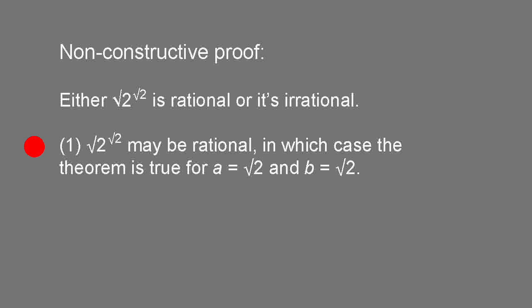First, it may be that root 2 to the power of root 2 is rational, in which case the theorem is true for a equals root 2 and b equals root 2, because we have that an irrational number to the power of an irrational number is rational.